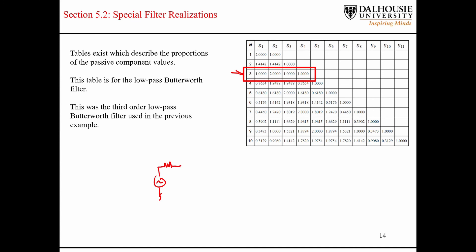For the third-order low-pass filter prototype, the source impedance is normalized to 1. You have a first capacitor normalized to 1, an inductor normalized to 2, and a second capacitor normalized to 1, with a load resistance also normalized to 1. This is how it all starts — we first determine the order of the filter needed to meet the design specs, then choose a topology such as a pi structure, and then look up the table to find the relative magnitudes of the different components.